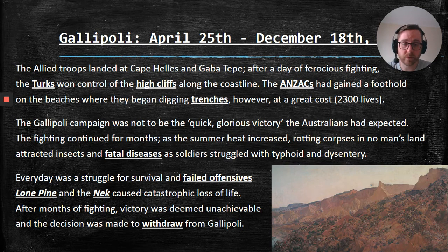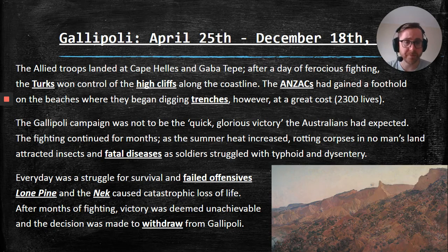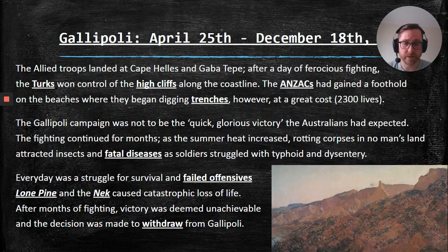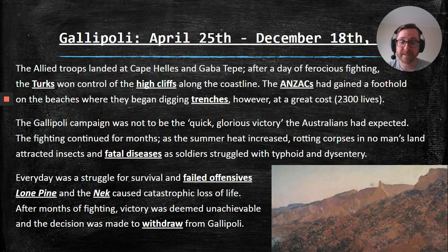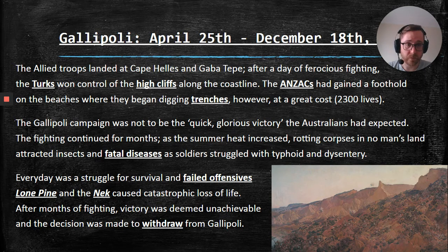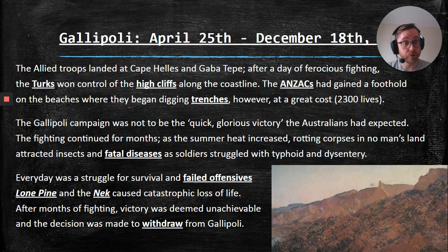The Gallipoli campaign was not to be the quick, glorious victory the Australians had expected. We'd gone off to war thinking honor and glory — that first day was a rude awakening. The fighting continued for months as the summer heat increased. Rotting corpses in no man's land attracted insects and fatal diseases as soldiers struggled with typhoid and dysentery. Every day was a struggle for survival. Failed offensives like Lone Pine and the Neck caused catastrophic losses of life — that first day started to look almost pleasant by comparison. After months of brutal fighting, victory was deemed unachievable and the decision was made to withdraw from Gallipoli. Fun fact: the most successful part of the campaign for the Allies was the retreat.